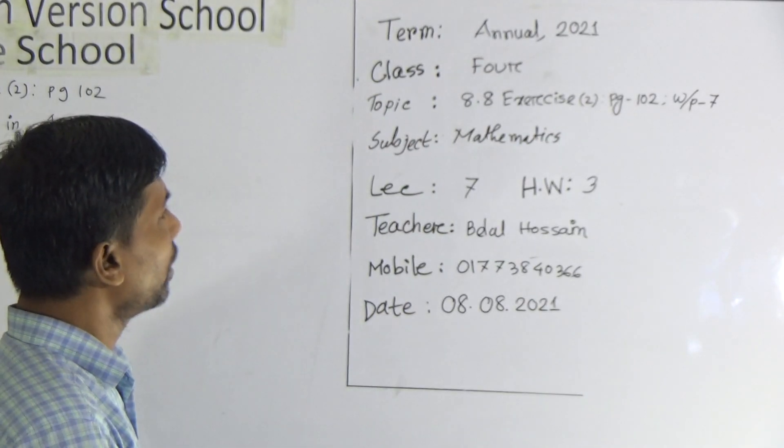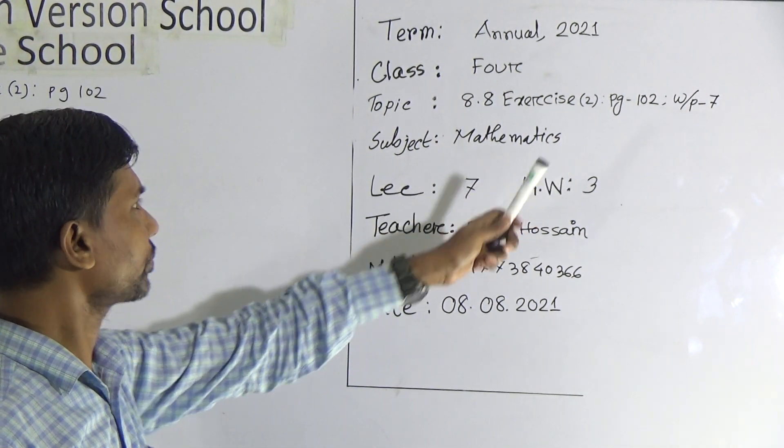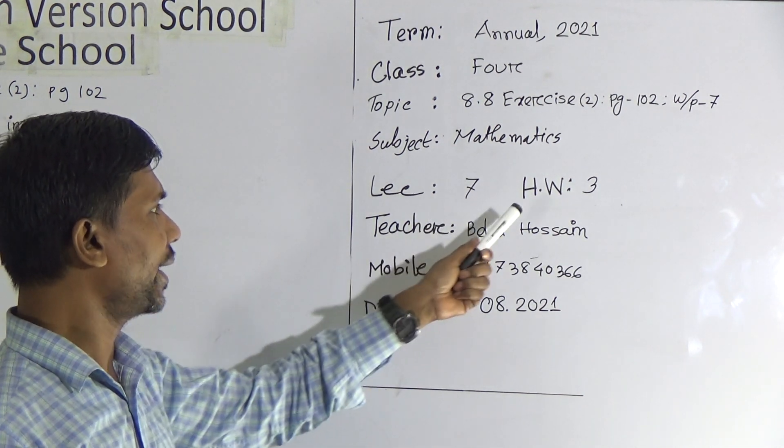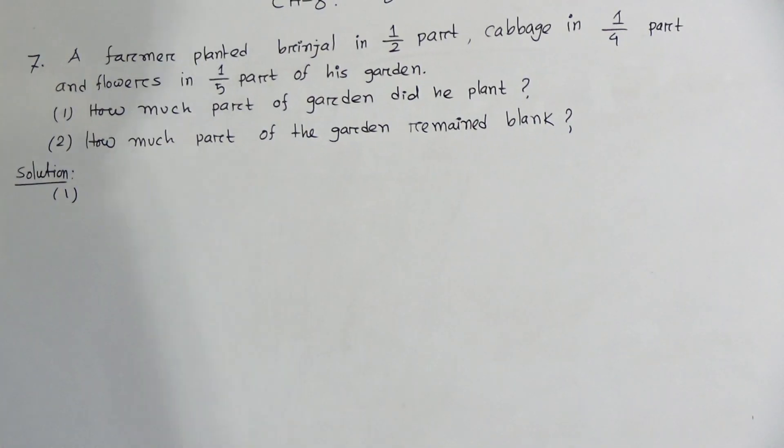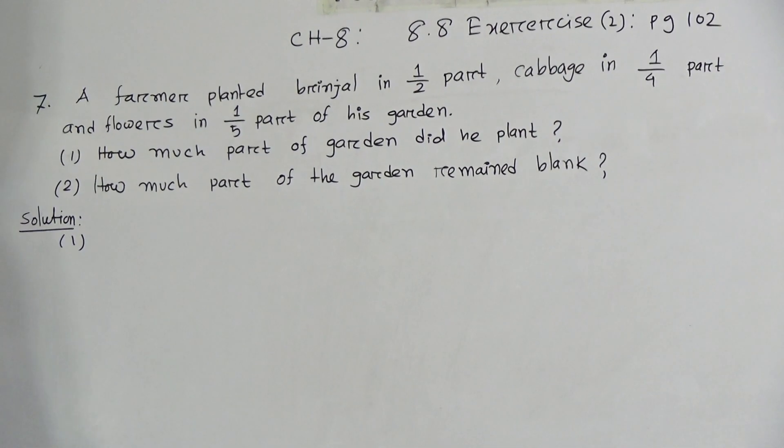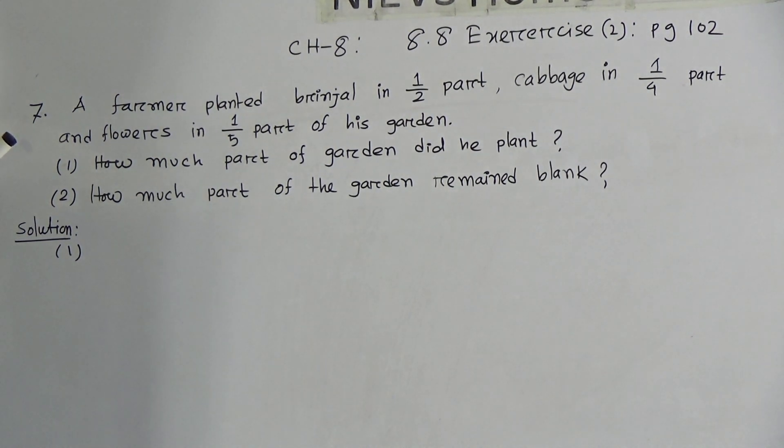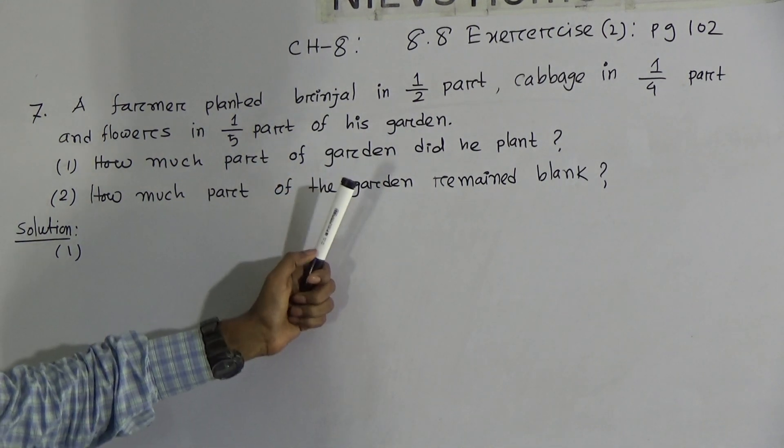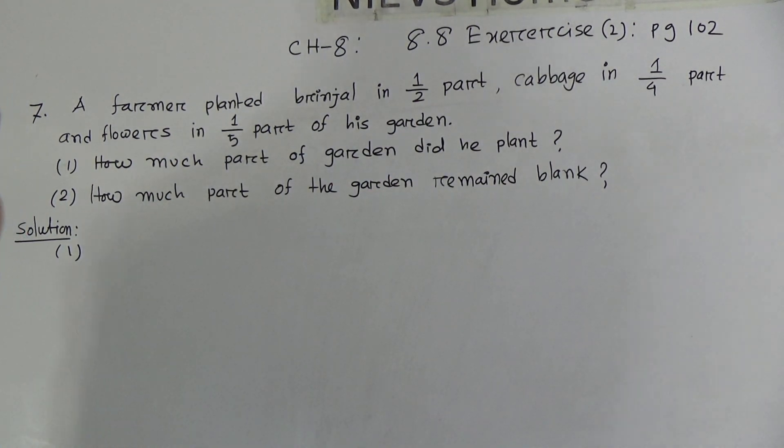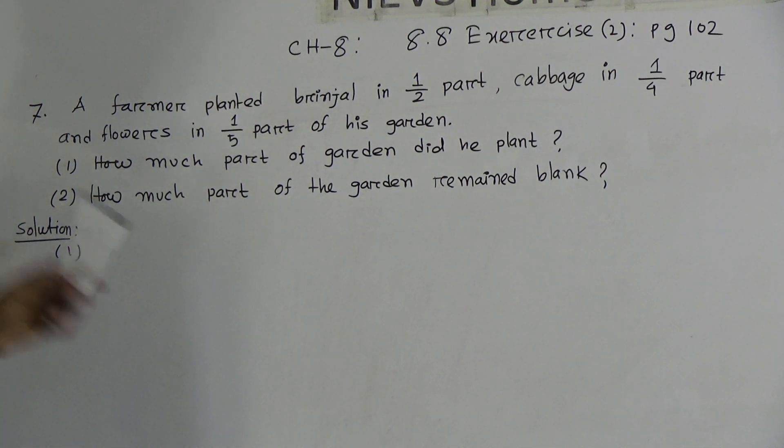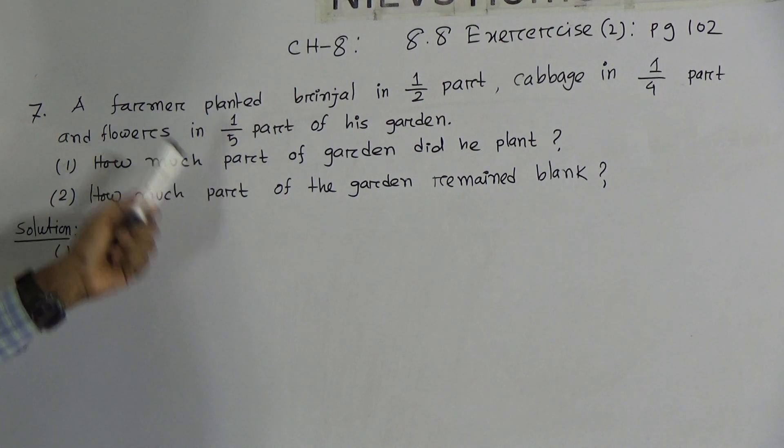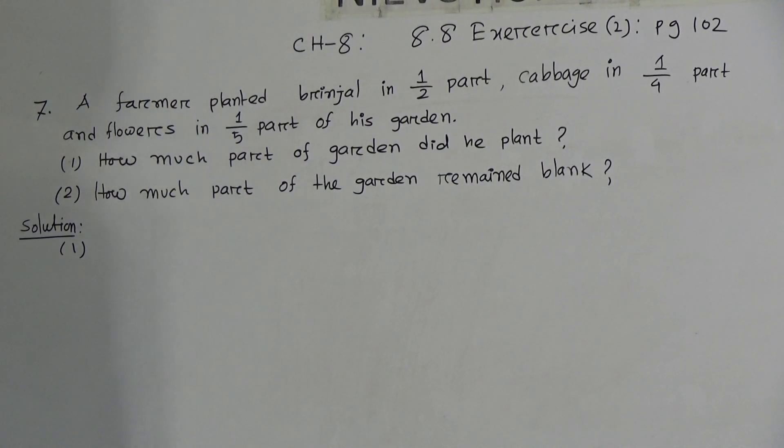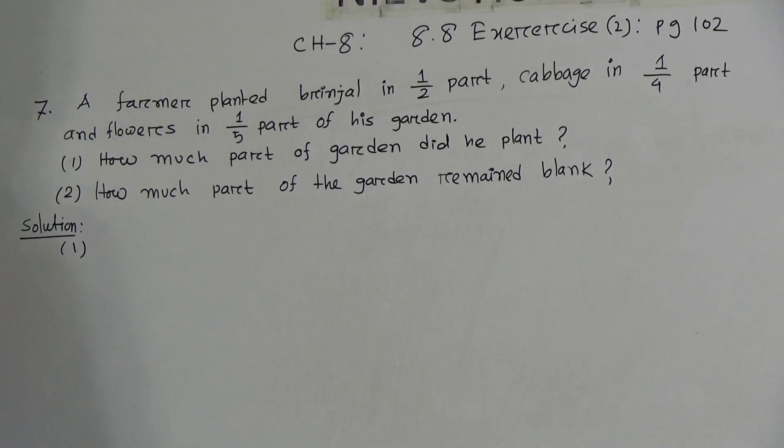Dear students, today our topic is 8.8 exercise 2, page 102, word problem number 7, lecture number 7, homework number 3. At first we read the question. Question number 7: A farmer planted brinjal in 1/2 part, that means half part, cabbage in 1/4 part, and flowers in 1/5 part of his garden.